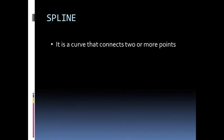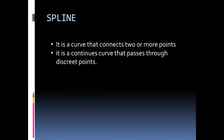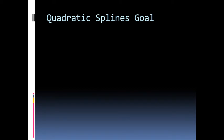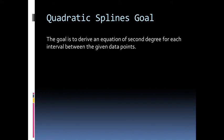First, let us define what is a spline. A spline is a curve that connects two or more points — it is a continuous curve that passes through discrete points. The goal of the quadratic spline method is to derive an equation of the second degree for each interval between the given points, given as f(x) = ax² + bx + c.